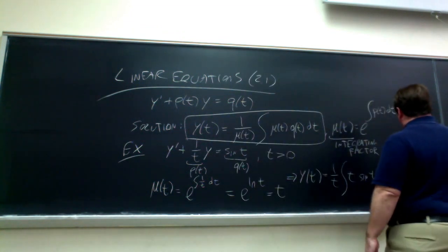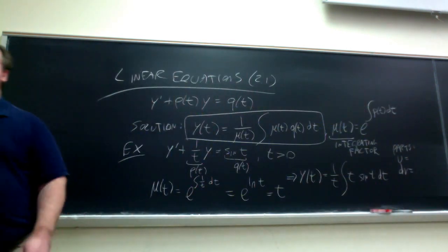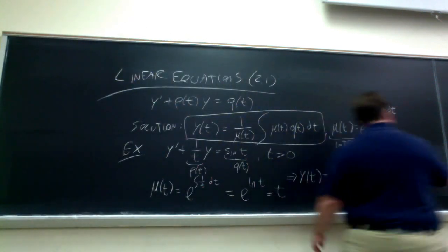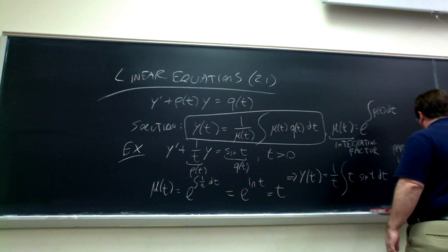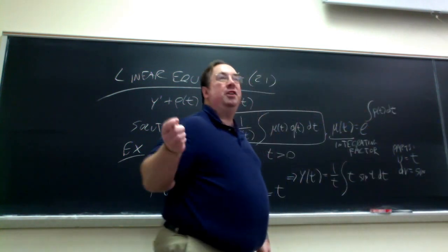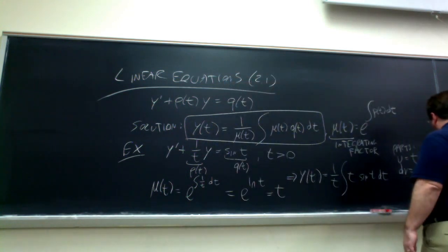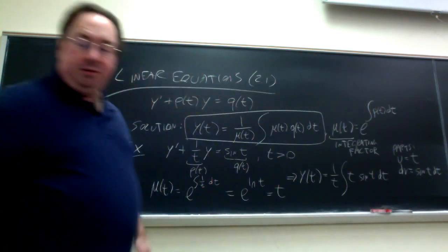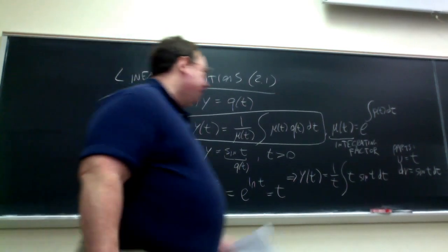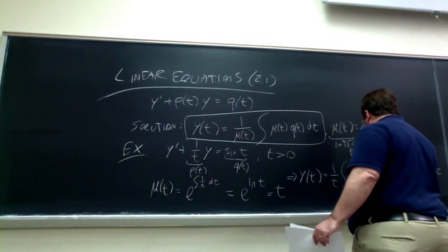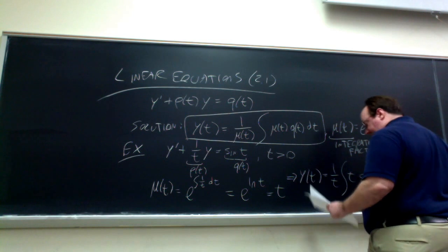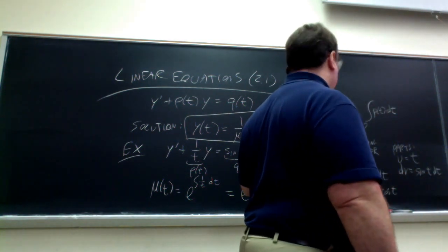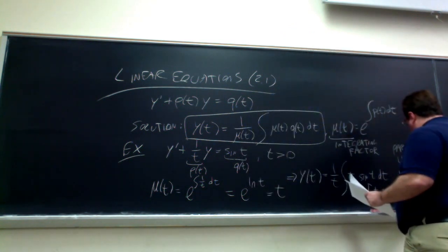Integration by parts — you have to pick your U and your dV. For this kind of integral, U should be T. When you have a power of your variable — a power of T times a sine, cosine, or exponential — always take that to be the U, because the power will keep decreasing by 1 until it's gone. If you were to work out the integral, you would have U times V, which is minus T cosine T, and then the integral of V dU, which gives you sine T.